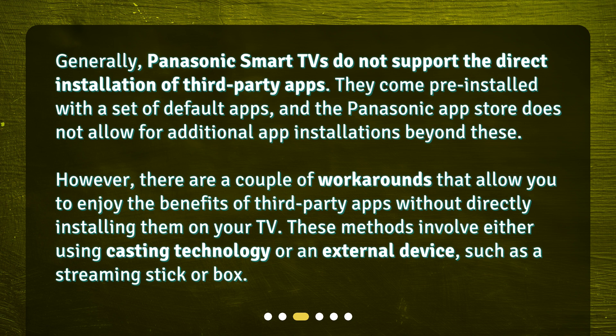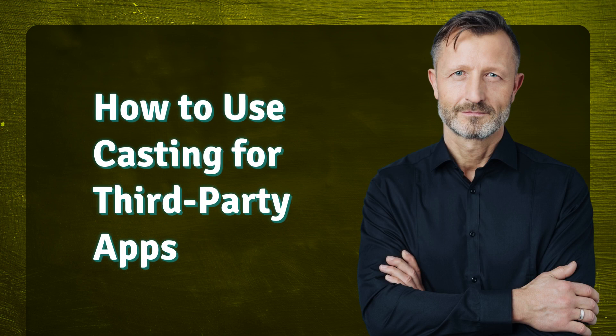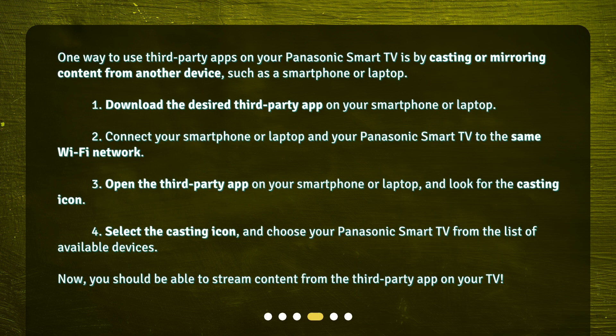These methods involve either using casting technology or an external device, such as a streaming stick or box. One way to use third-party apps on your Panasonic Smart TV is by casting or mirroring content from another device, such as a smartphone or laptop.